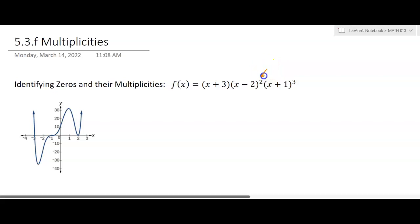We can say x minus 2 is a factor with a multiplicity of 2. And so this x plus 1 is a factor with a multiplicity of 3. My x plus 3 here has a multiplicity of 1. So we don't usually write the 1.